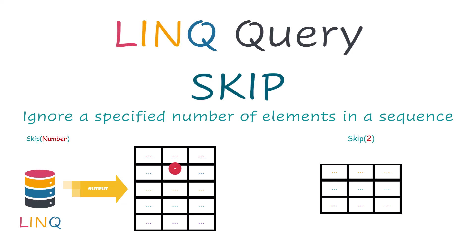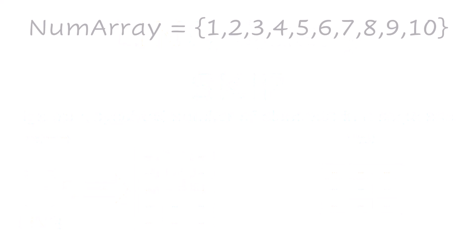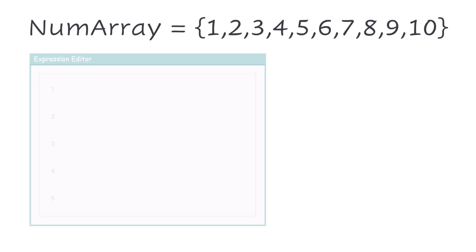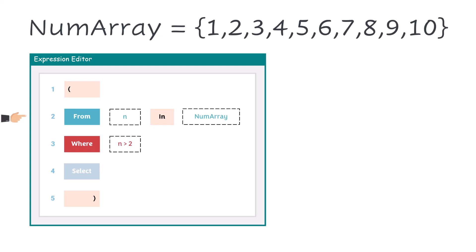Before I start explaining the function in UiPath, let me show you this example to understand the function better. Assume I have the following integer array which contains 10 numbers, from 1 to 10. I have this simple query to loop through all numbers in this array. It checks if the number is greater than 2, then it selects all numbers which meet this condition.